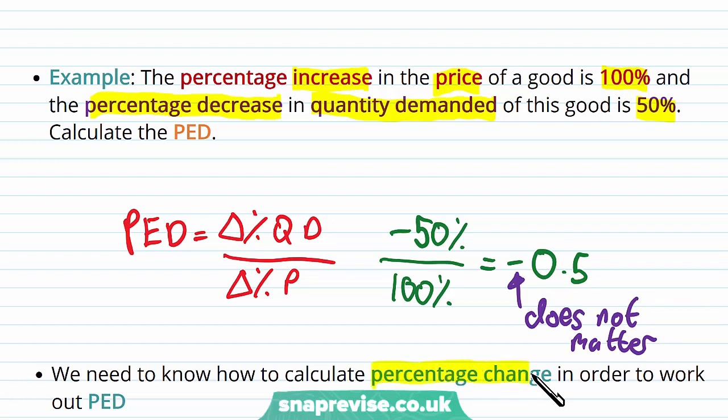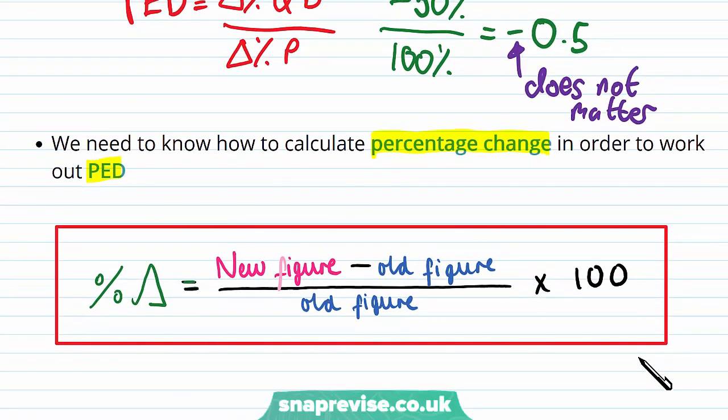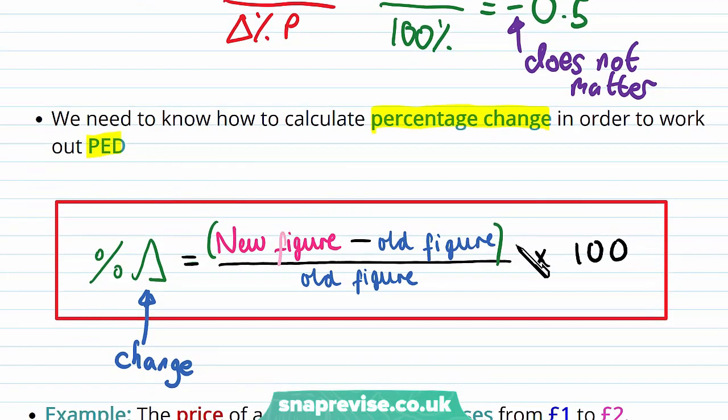We now know how to calculate PED. We need to know how to calculate percentage change in order to use PED. Remember, we're not using just the raw unit amount, we use percentage change. How to calculate percentage change? Remember, this delta sign means change. Percentage change is equal to the new figure minus the old figure divided by the old figure times 100. When we're dividing it by the old figure, remember this is going to be in a bracket of sorts, and then the times 100 comes after we have calculated this fraction.